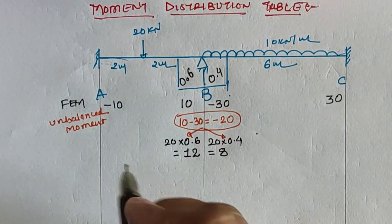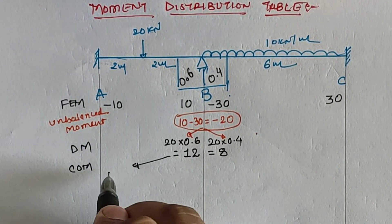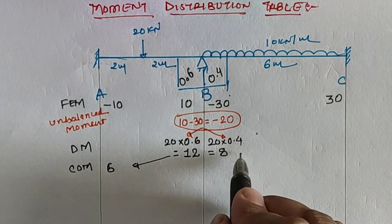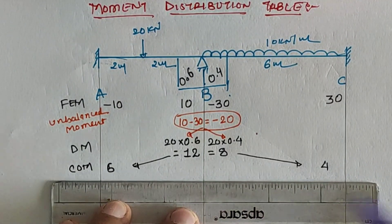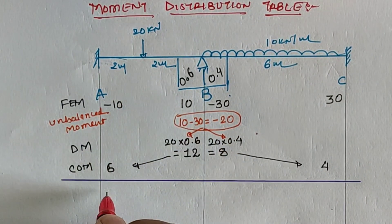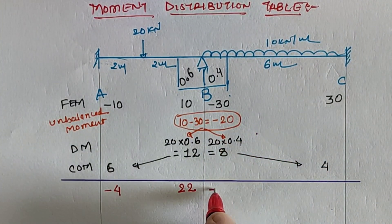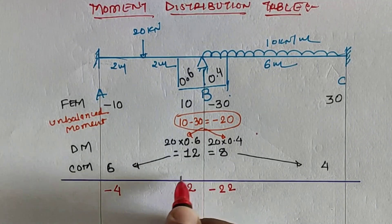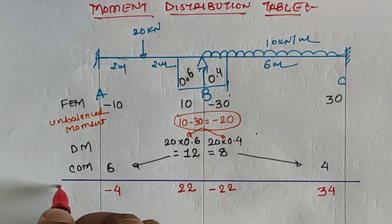Due to the far-end fixed condition, we carry over the moment as one-half of the distributed moment: 6 kilo-Newton-meter carried to A, and 4 kilo-Newton-meter carried to C. Since there is only one intermediate joint, we need not continue to further iterations beyond 0.1 distribution moment accuracy. Final moments: at A it is minus 10 plus 6 equals minus 4; at B-left, 10 plus 12 equals 22; at B-right, minus 30 plus 8 equals minus 22 (total summation is 0); and at C, 30 plus 4 equals 34 kilo-Newton-meter.